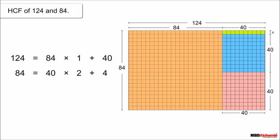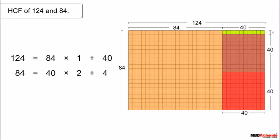Now 84 is divided by 40 with remainder 4. In the figure, out of the rectangle of length 84 and breadth 40, two squares of 40 × 40 have been taken out and a rectangle of 40 × 4 is the remainder. Again, previous divisor 40 becomes the new dividend and previous remainder 4 becomes the new divisor. Now 40 is divided by 4 with no remainder. In the figure, out of the rectangle of 40 × 4, ten squares of 4 × 4 have been taken out and no area remains. In both methods, we have done the same thing.